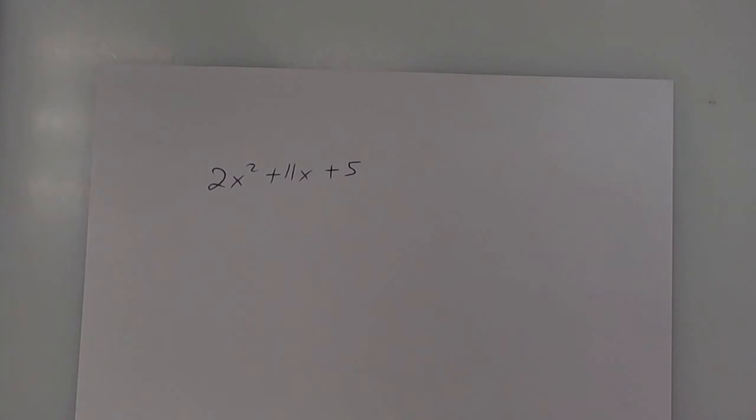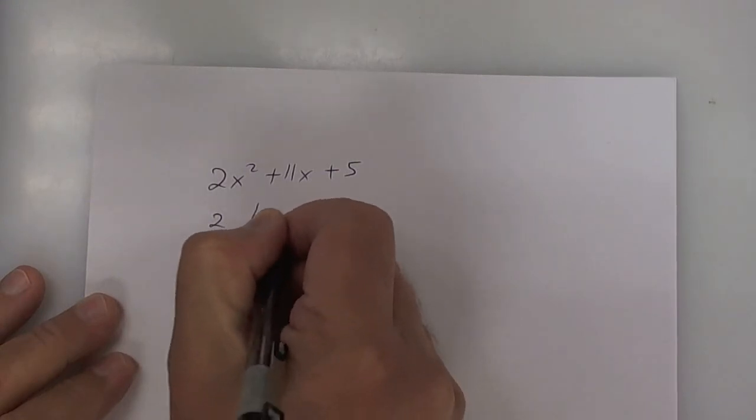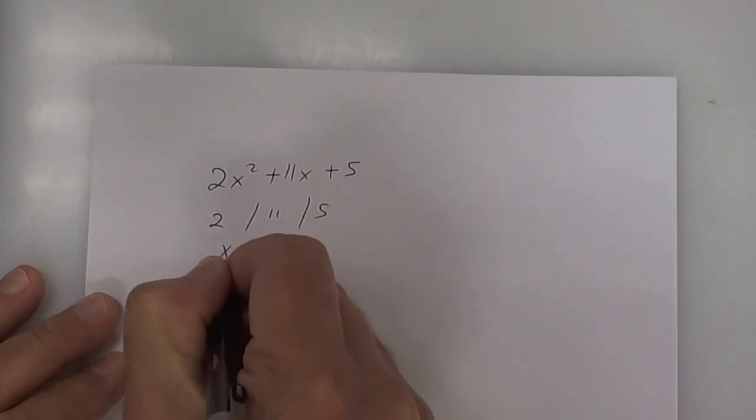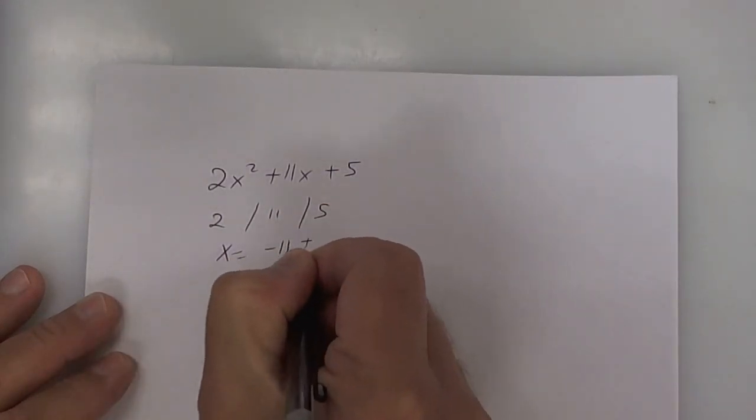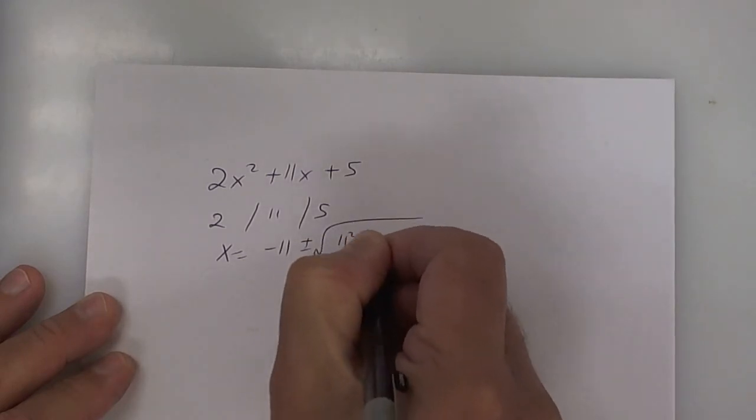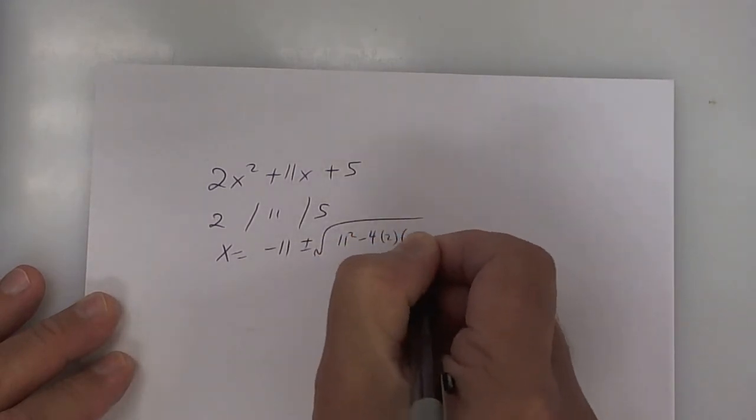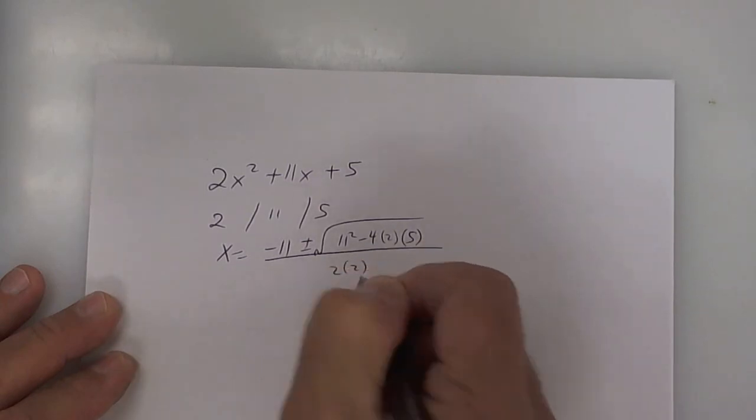Let's go over this. Watch what I do. You have A, B, and C. So x equals negative B plus or minus the square root of B squared minus 4 times A times C, all divided by 2 times A.